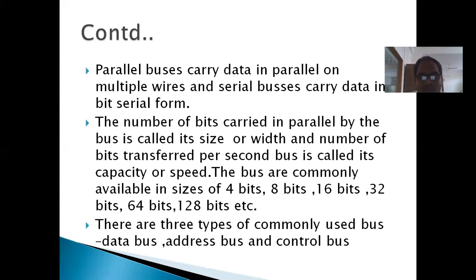Parallel buses carry data in parallel on multiple wires, and serial buses carry data in serial form. The number of bits carried in parallel by the bus is called the size or width. The number of bits transferred per second is called the capacity or speed of the bus. The buses are commonly available in sizes of 4 bits, 8 bits, 16 bits, 32 bits, 64 bits, and so on in powers of 2.